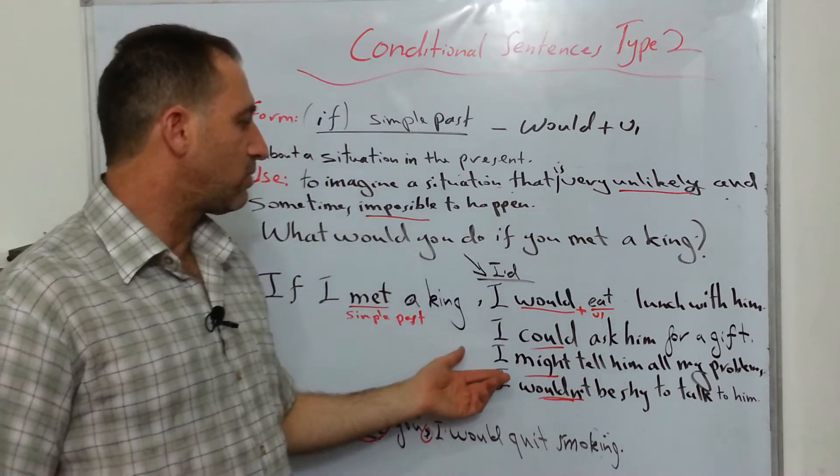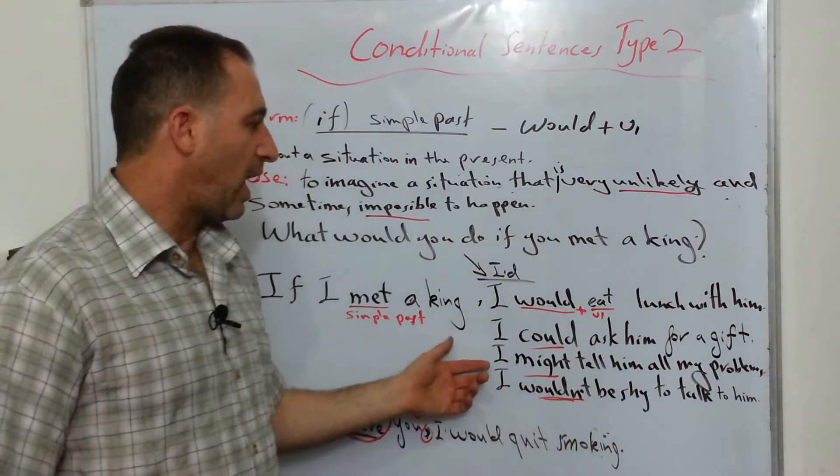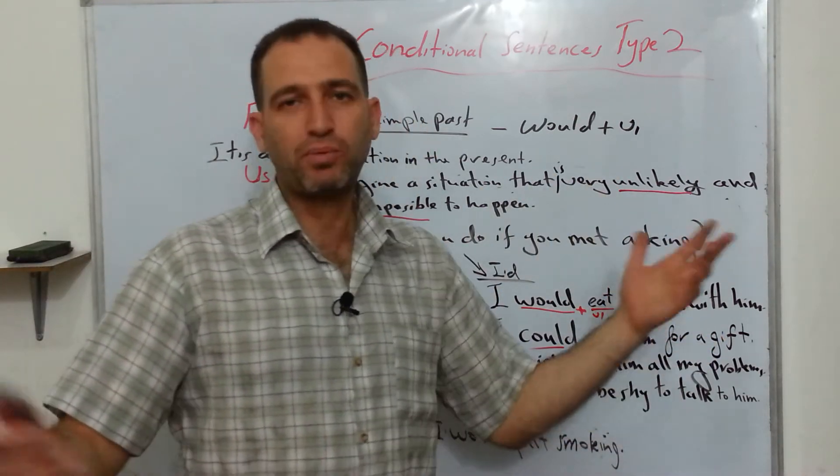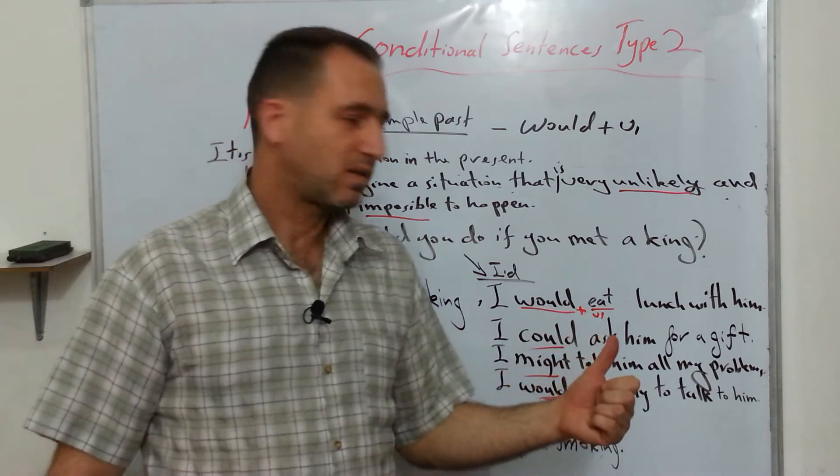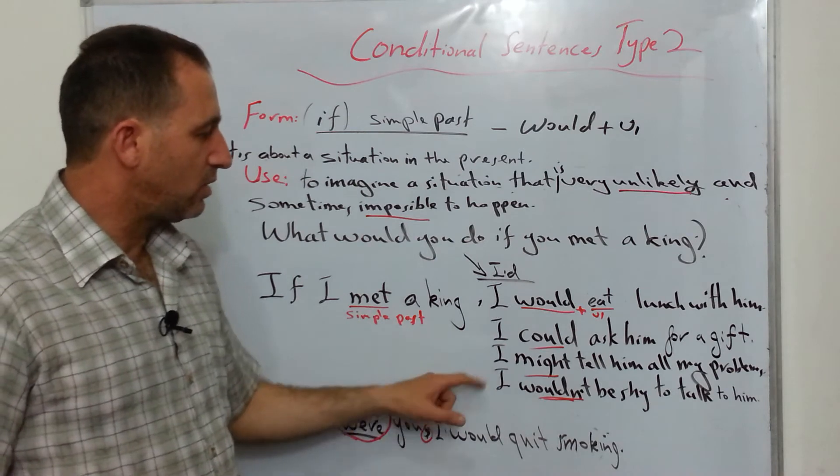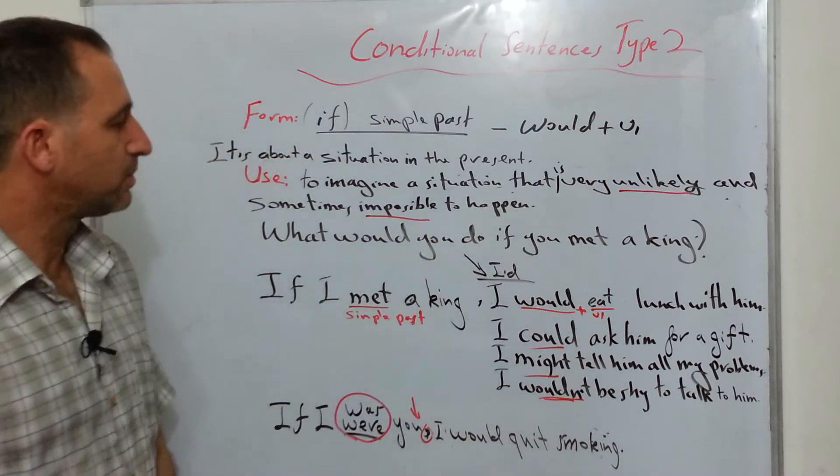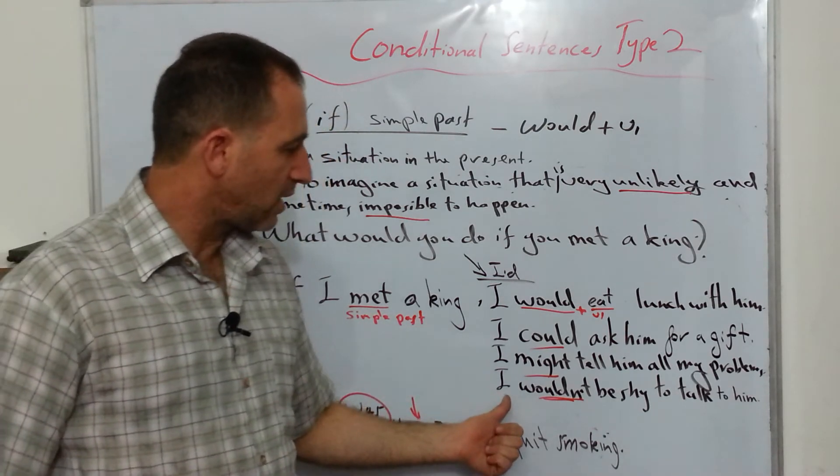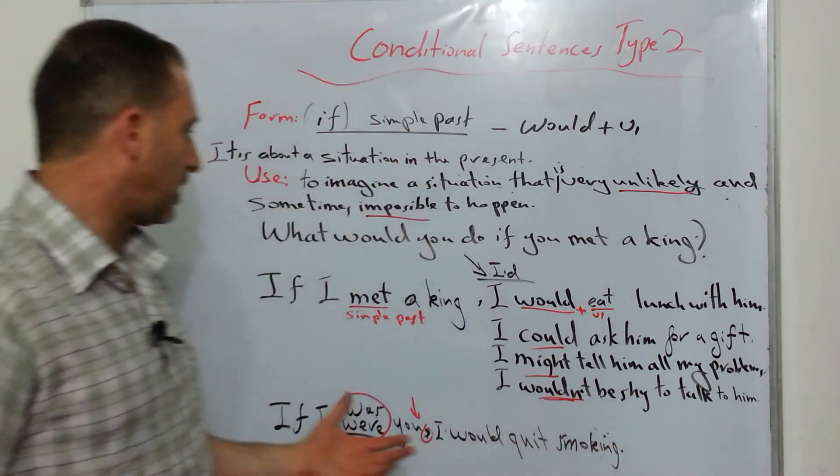Or you can even use might. And you can think of it like would probably. I would probably tell him all my problems. But instead I said might. So you can use would, you can use could, you can use might, especially when you're not very clear. And the negative form can be like this: I wouldn't be shy to talk to him.